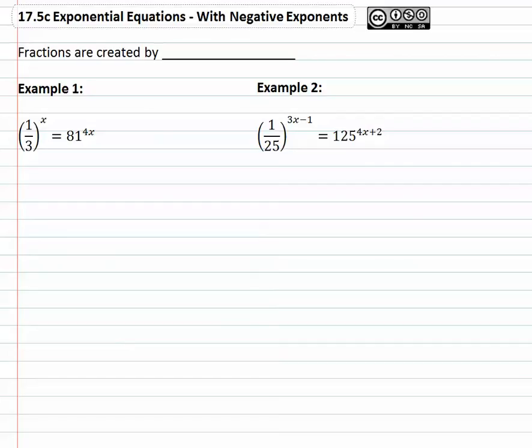With fractions, it takes one extra exponent property to be aware of as we get the same base on both sides, and that's to remember that fractions are created by negative exponents. In other words, we remember the property a to the negative m simply meant we put one over the a to the m.